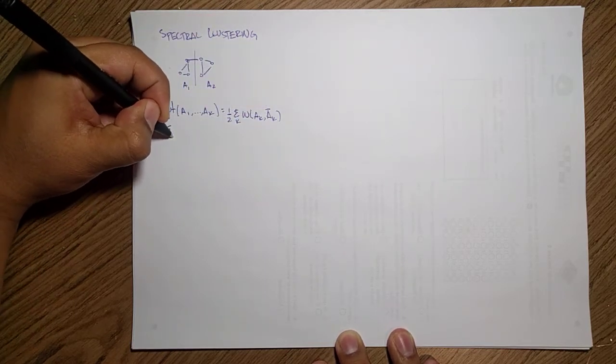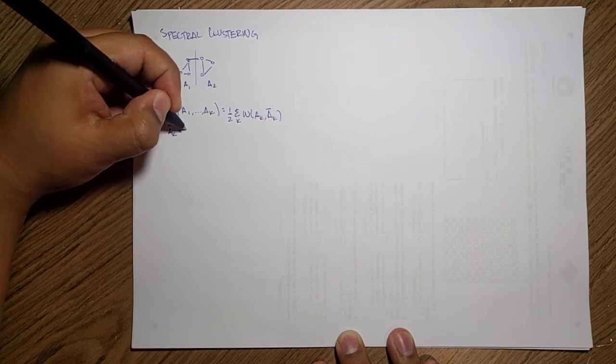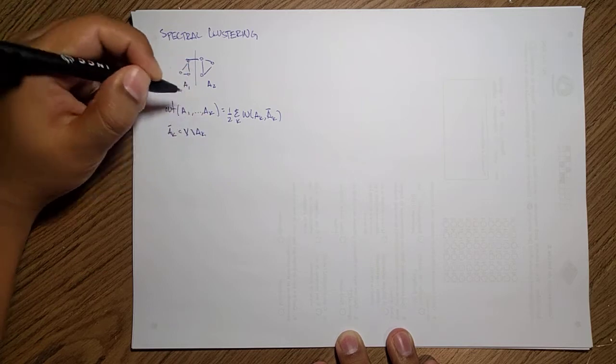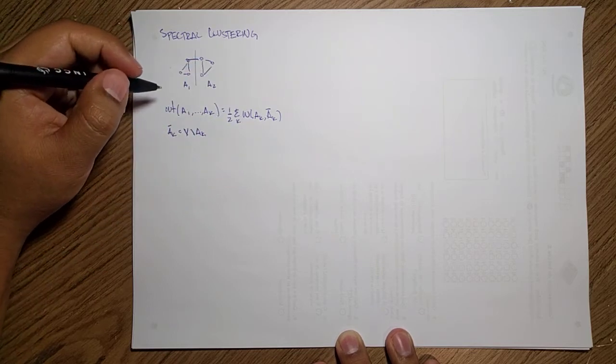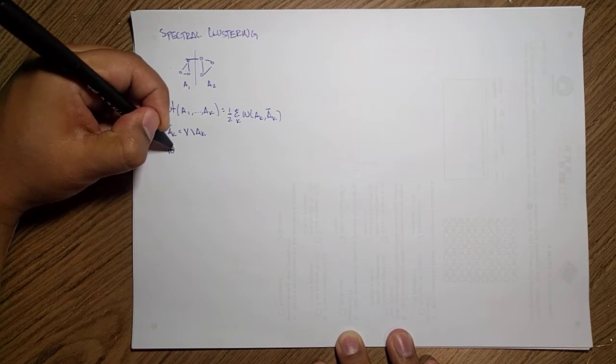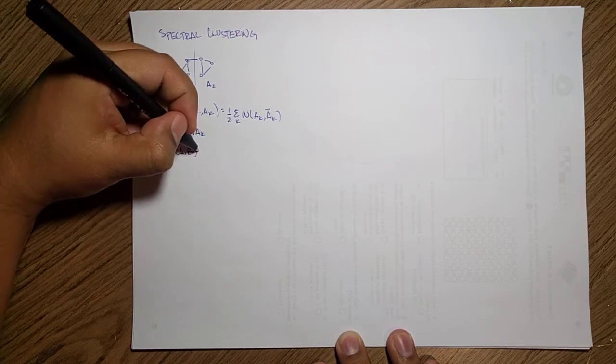So I'm taking all the other different vertices. Ak complement here is just all my vertices, and I'm going to remove the k from them. And this W over here is nothing else but the sum of the weights.